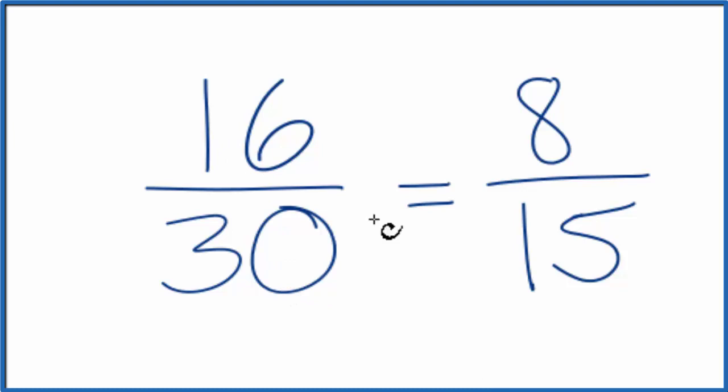So our common factor between 16 and 30, that ended up being 2. If you divide 16 by 30 and 8 by 15, you'll get the exact same value, the exact same decimal. That's because these are equivalent fractions. They have the same value, it's just that we've reduced 16 30ths to 8 fifteenths.